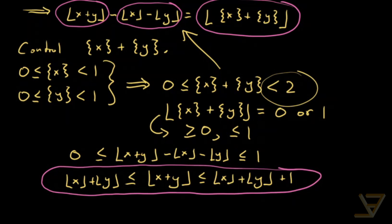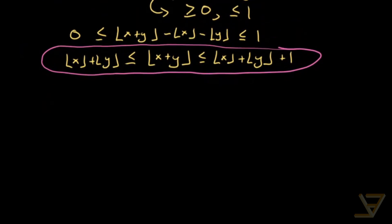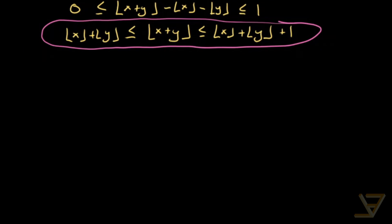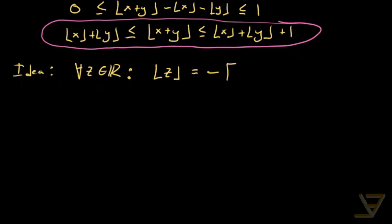Now let's translate this to the ceiling case to find an analogous result for ceilings. The idea we're going to use is an identity that can be proven from first principles: for all z in the reals, the floor of z equals the negative of the ceiling of negative z. I'm not going to prove this because it's fairly well known — it allows us to translate between floors and ceilings — but you can prove it from first principles.